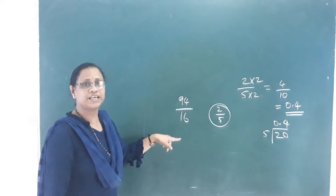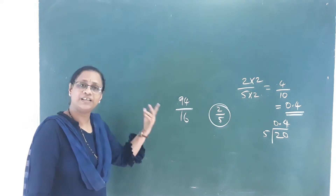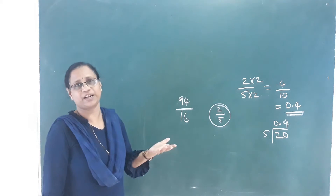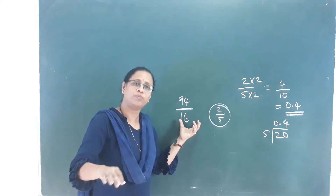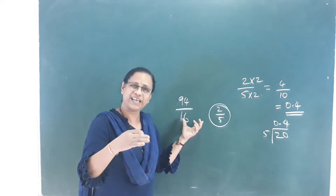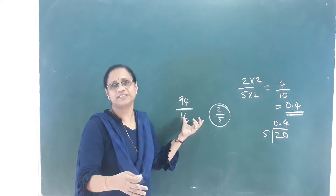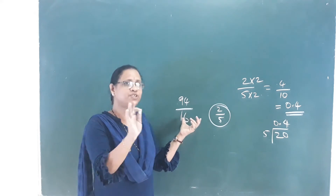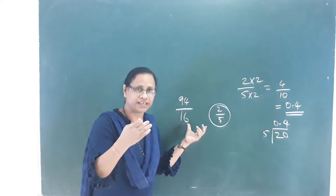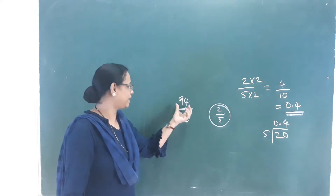If you perform division on an improper fraction, it becomes a mixed fraction. Improper fraction is almost the same as mixed fraction.